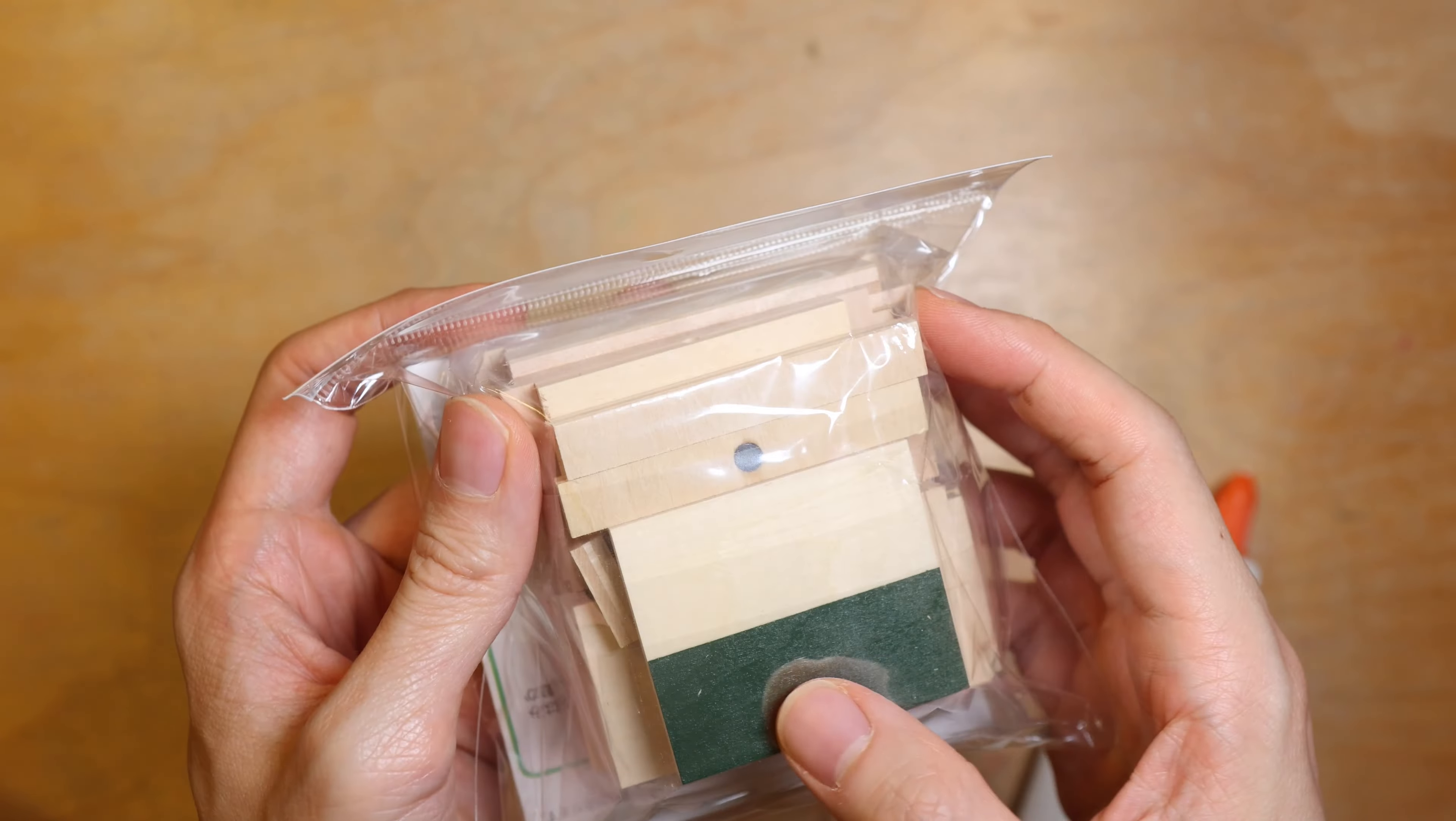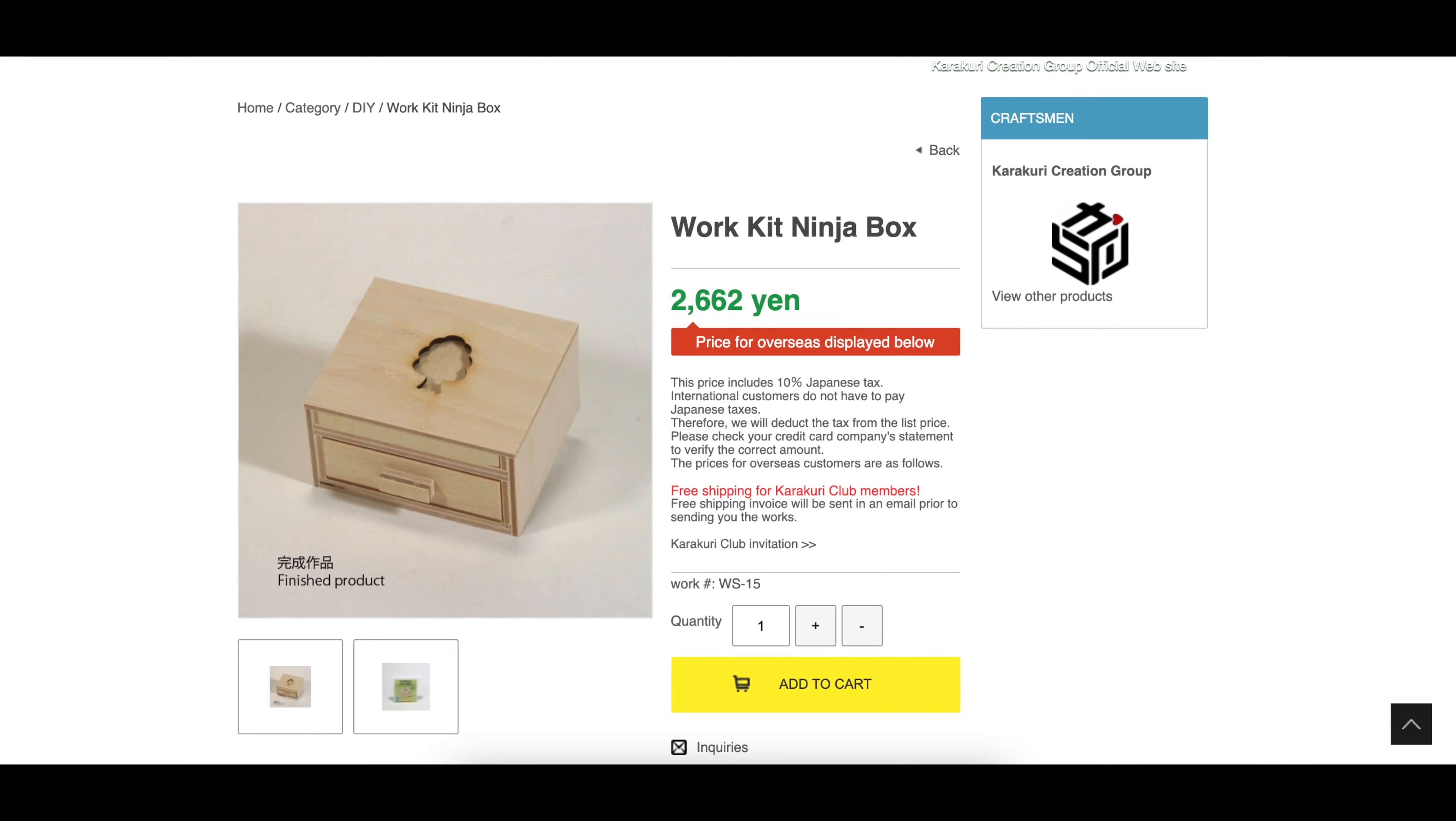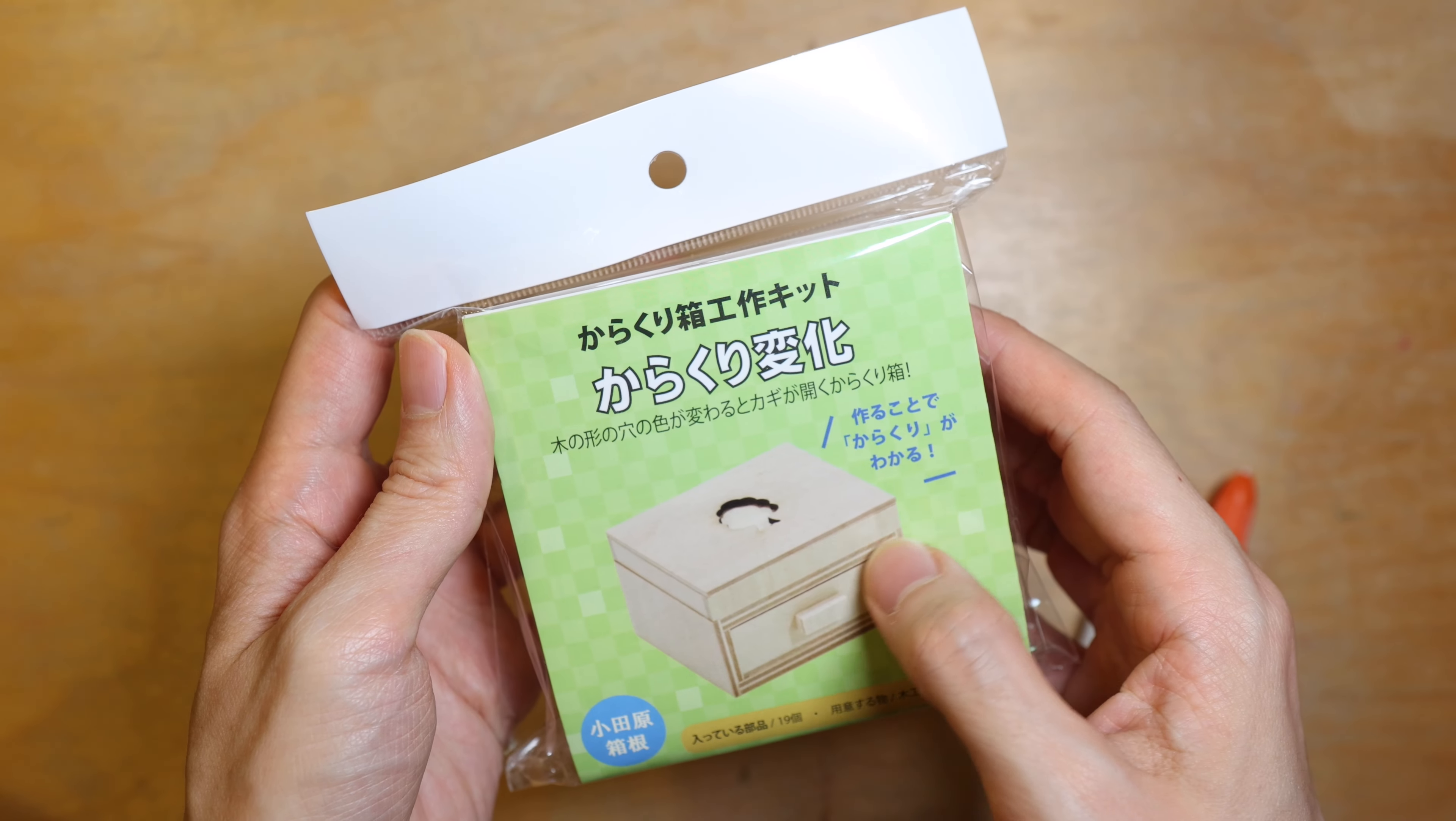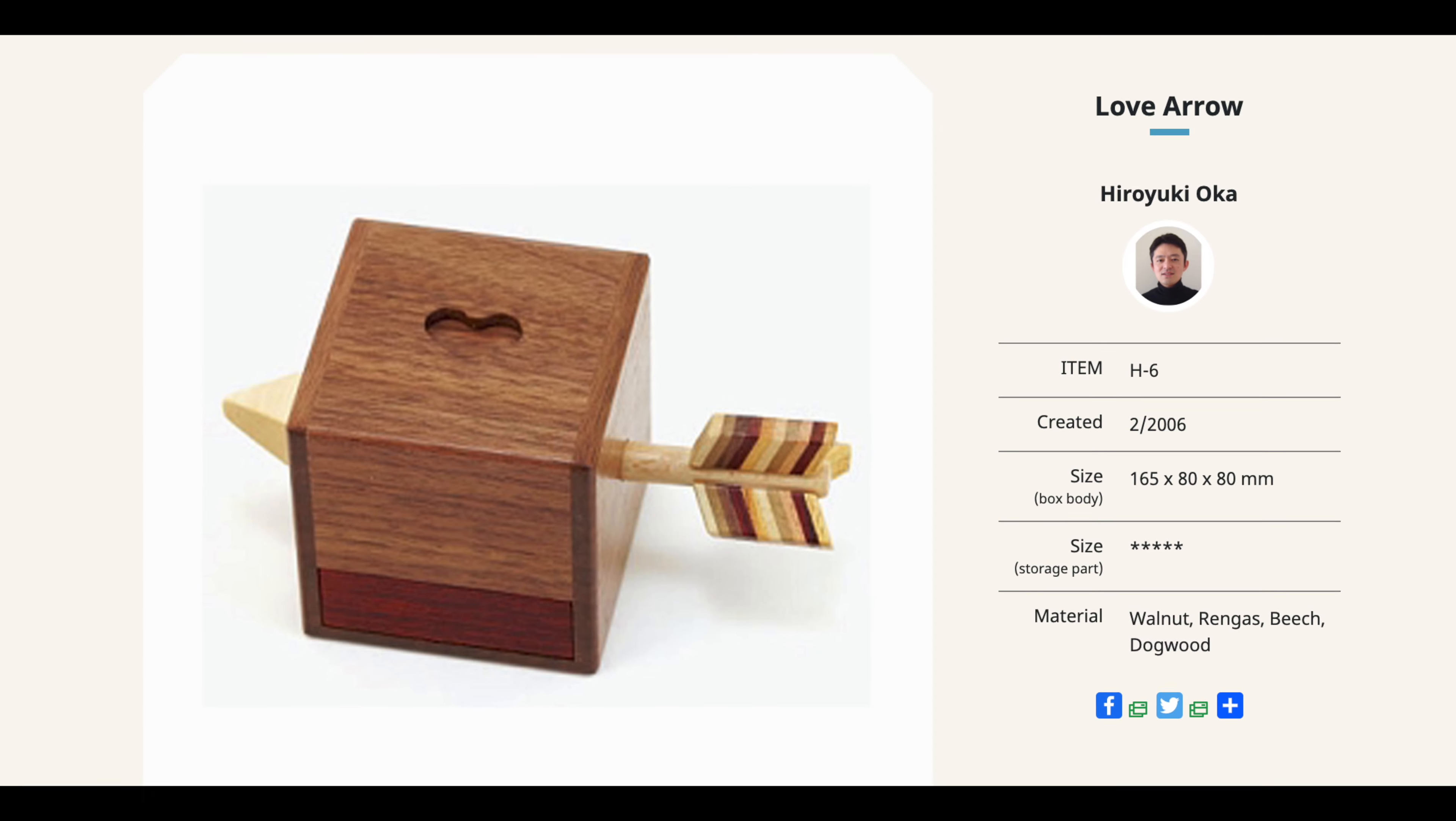You can find my previous video in the link up here. Today I am going to make the Ninja Box by Karakuri Creation Group, and I highly recommend you to check their site out. I will put a link in the description below. The Ninja Box is based on the Love Arrow Box, which has already been discontinued.